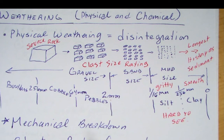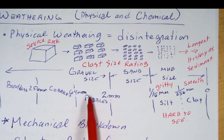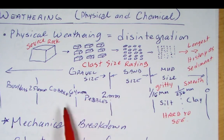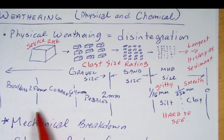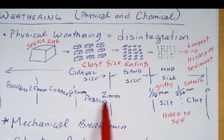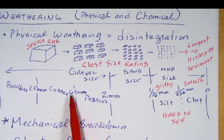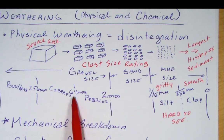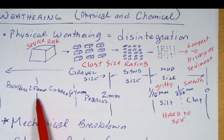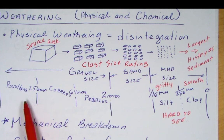Your book also points out that in the gravel size ratings there are things called pebbles, cobbles, and boulders. Pebbles are anywhere from 2 to 64 millimeters — about 3 inches. Remember, 64 millimeters is our lapilli size. Cobbles are 64 to 256 millimeters, and anything coarser than 256 millimeters would be boulders.